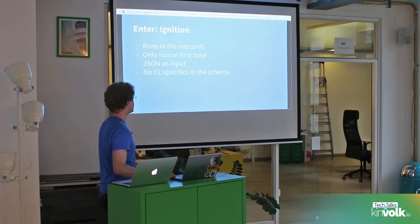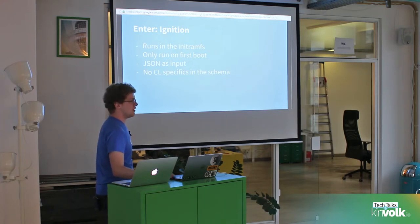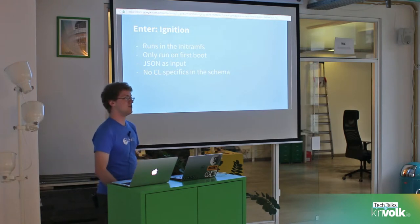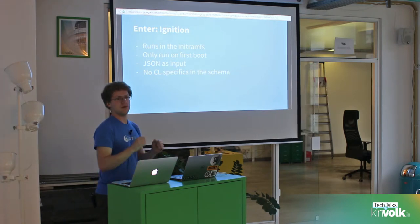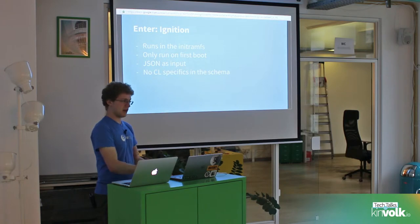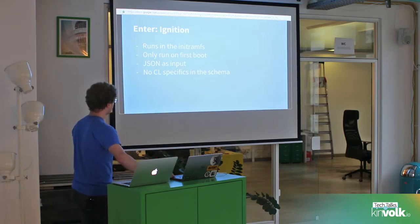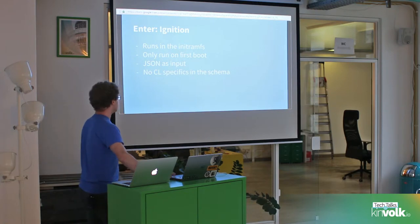So for example, instead of saying 'please turn on etcd and here are the arguments,' you have to be explicit — here's a systemd drop-in for the etcd-member service with the options that I need. I'll get more into why we removed that abstraction in a moment.